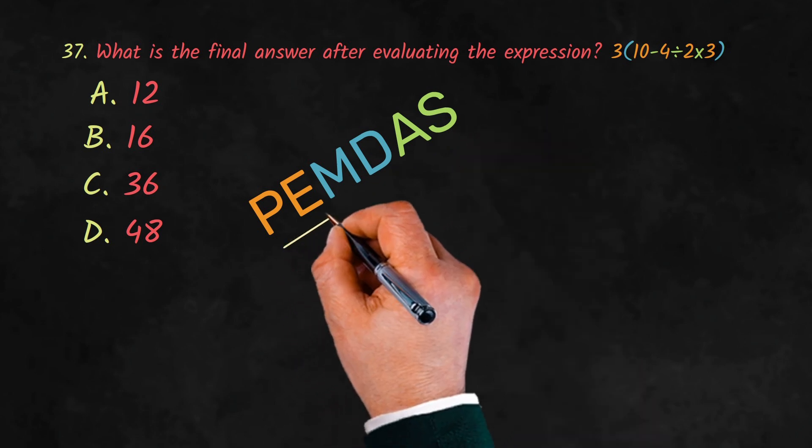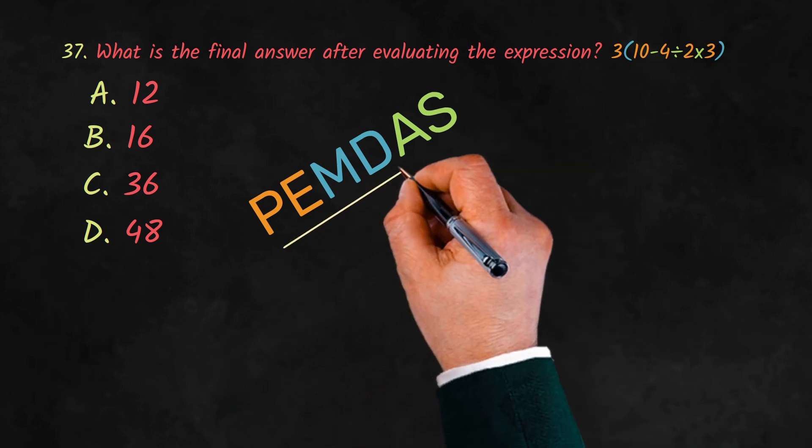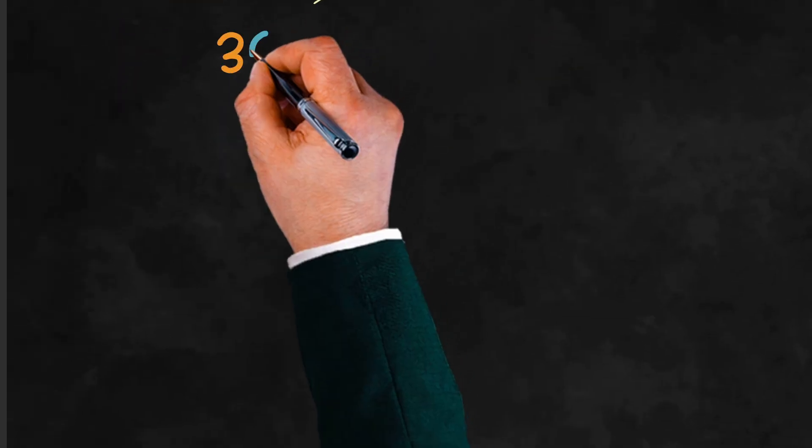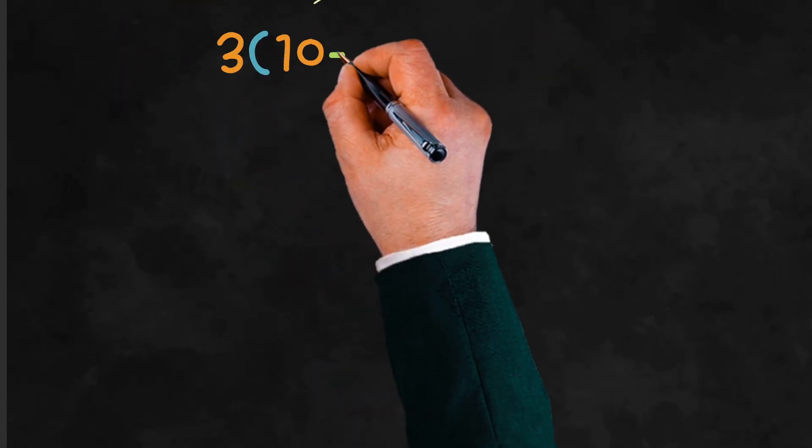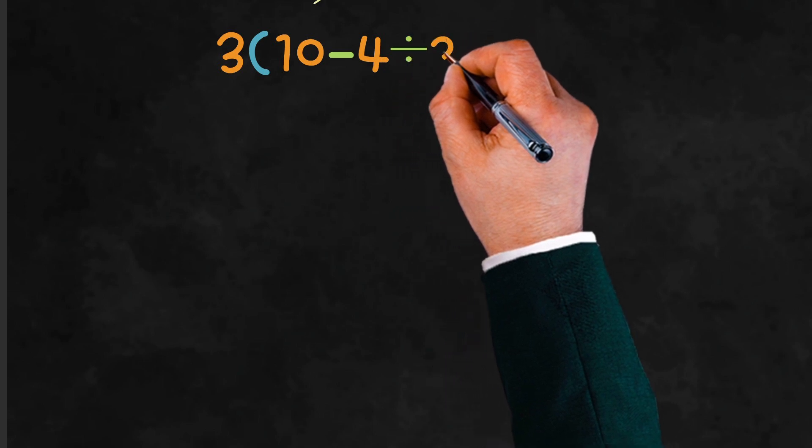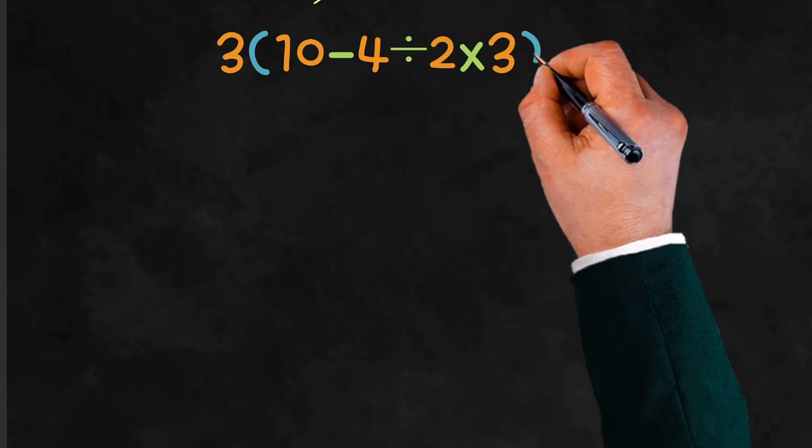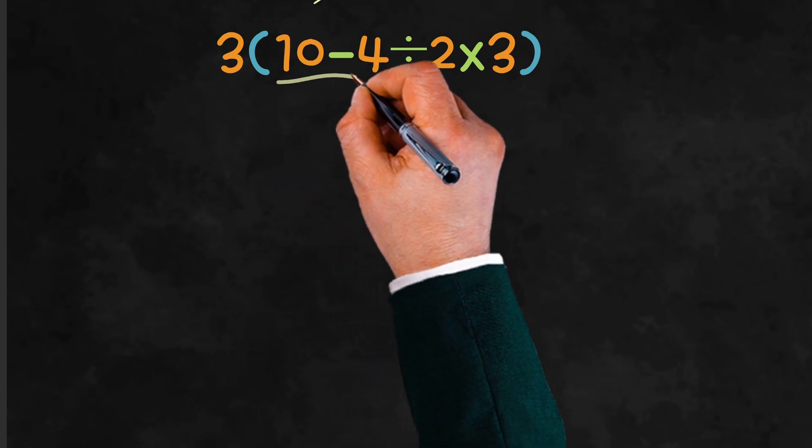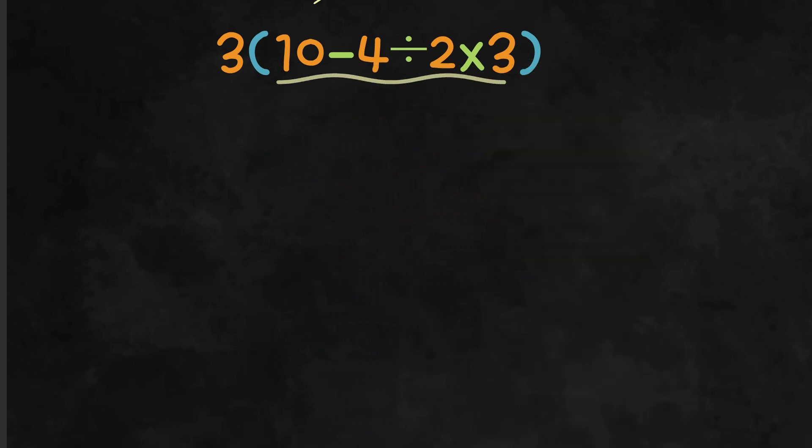These rules tell us the correct order to follow when solving expressions. The expression is 3(10 - 4 ÷ 2 × 3). To solve this expression, first we solve what's inside the parentheses. Then we handle division and multiplication from left to right. And finally, we apply any addition or subtraction.